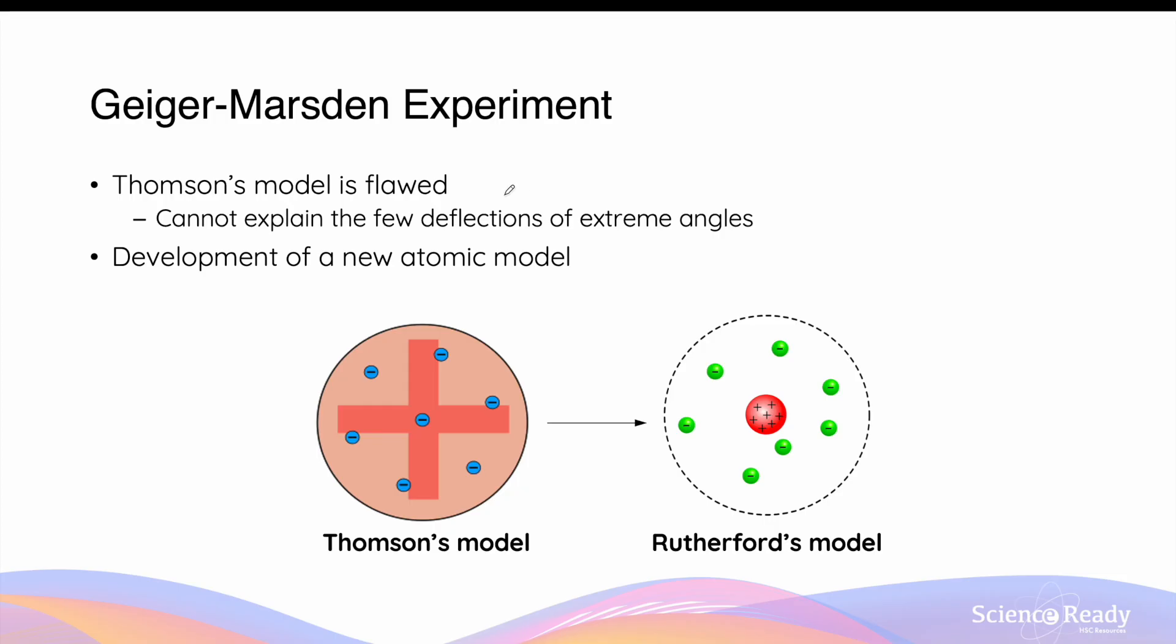Geiger and Marsden's experiment using the gold foil and alpha particles shows that the Thomson model of the atom is flawed because it cannot explain the few deflections of extreme angles that were seen by Geiger and Marsden. As a result, it led to the development of a new atomic model, which is Rutherford's atomic model of the atom.